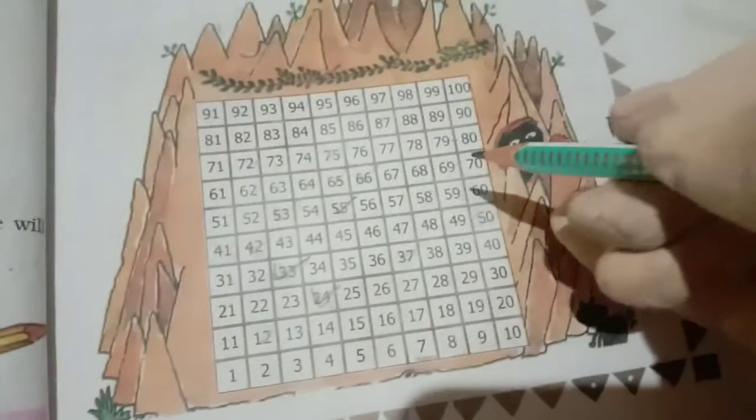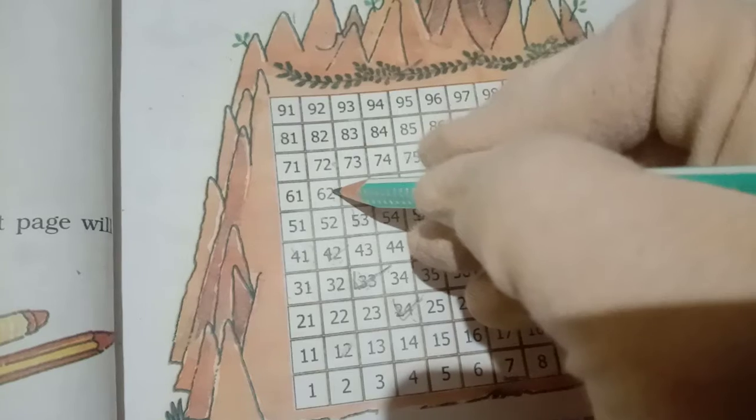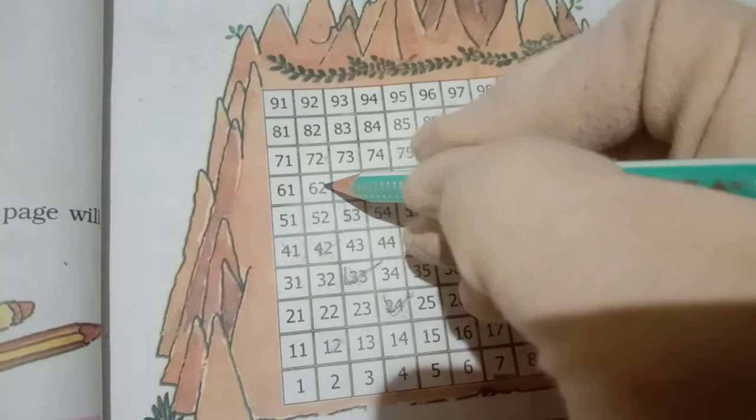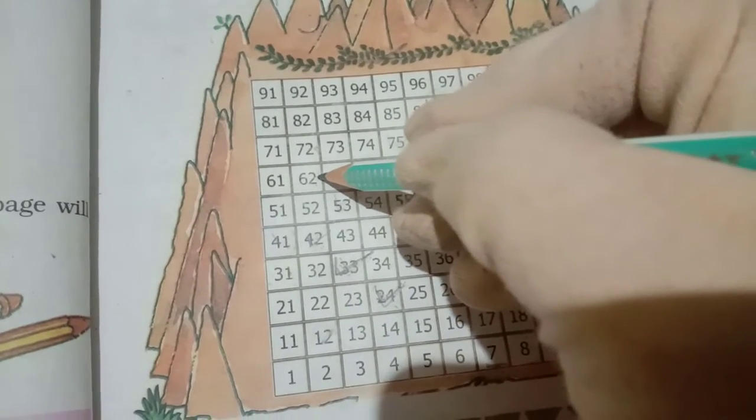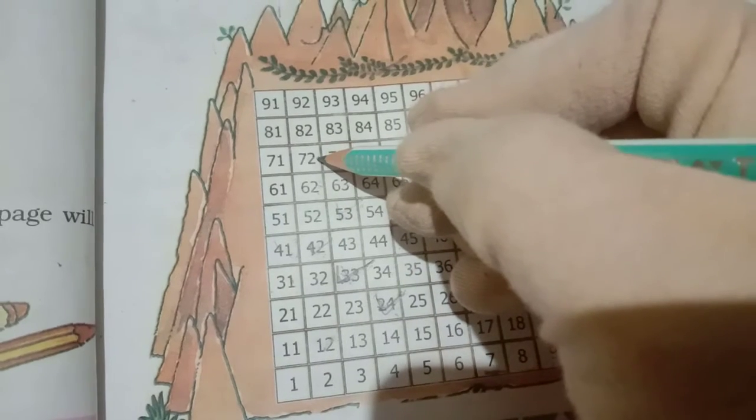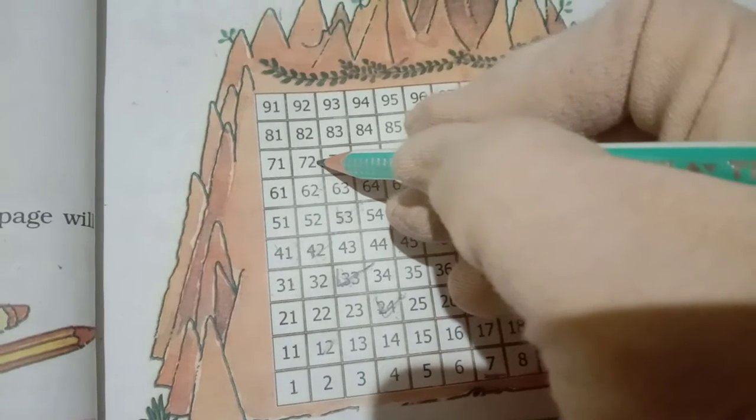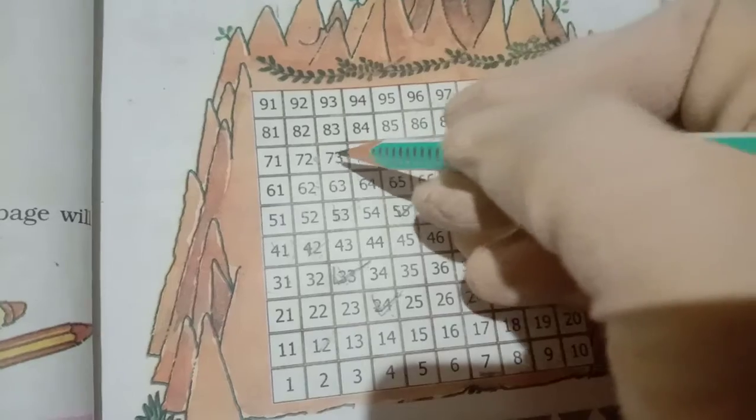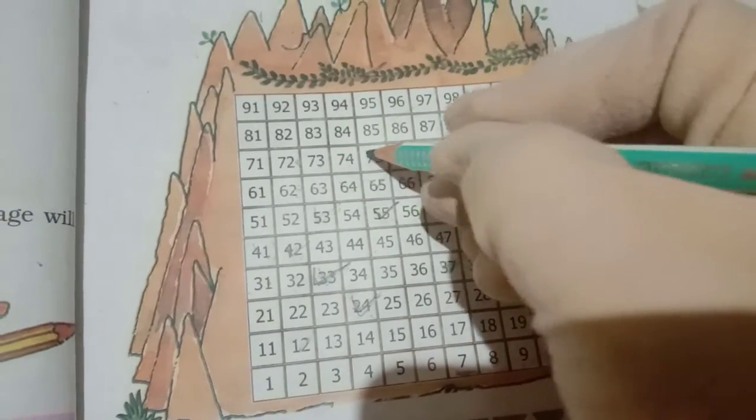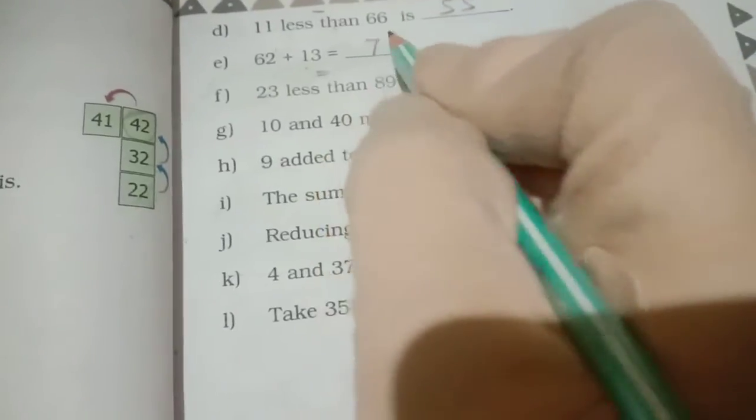Now 62 plus 13. Now our 62 number is here. 13, 10 plus 3. 62, that we have to go upside means 72. And go 3 step move. 1, 2, 3 means 75. So answer will come 75.